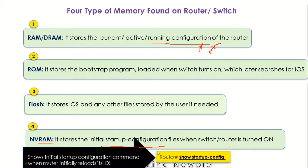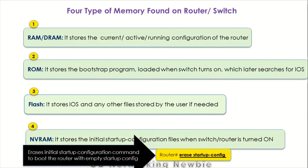If you want to see what is in the startup configuration file, we have a command provided by Cisco: 'show startup-config'. By using this command we can see what commands are already saved in this configuration file. We can also erase the contents of the startup configuration file using the 'erase' command, which will delete the startup configuration file of the device.